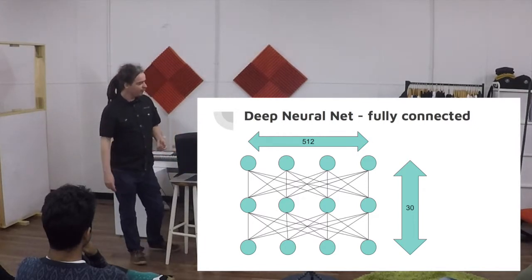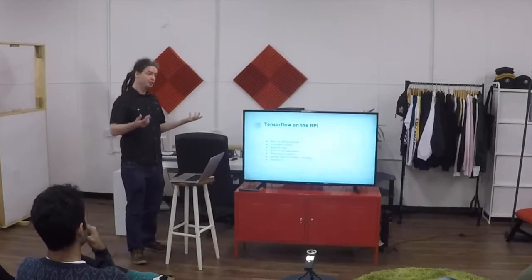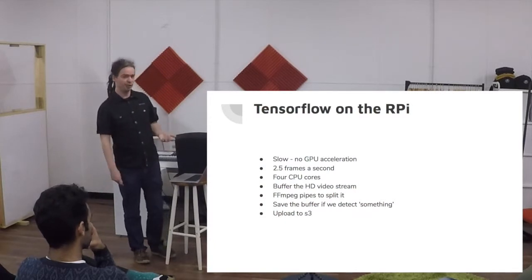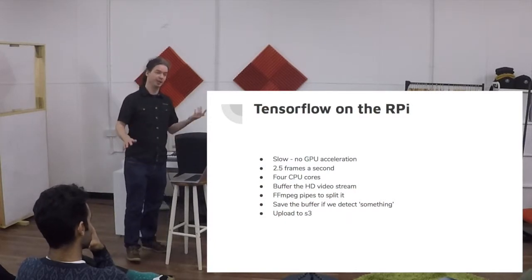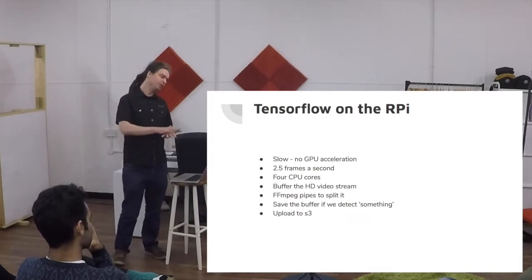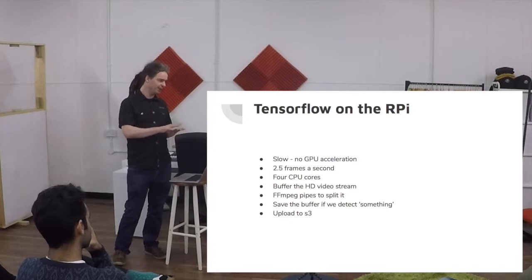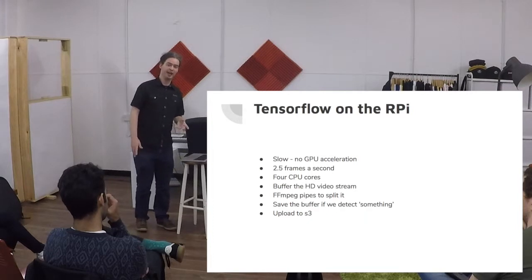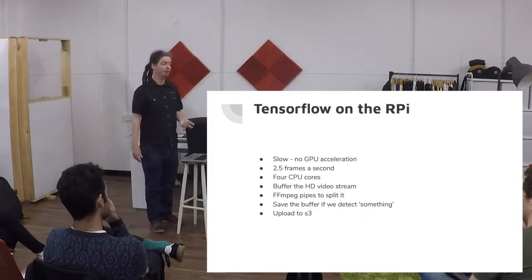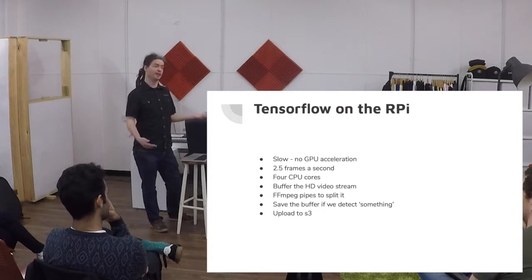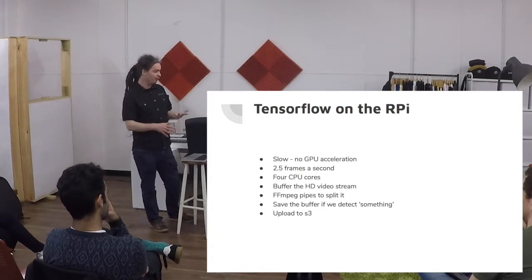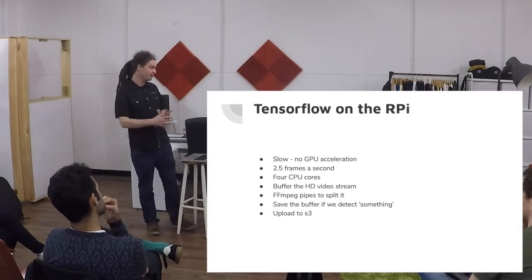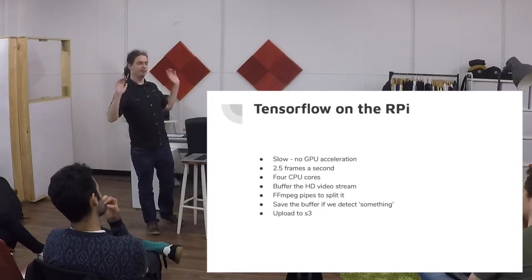Once the model is trained, it's deployed to Raspberry Pis. With no GPU acceleration it runs entirely on the CPU, which is very slow. Technically you could use the GPU to speed it up, but I'm using the GPU for the camera pipeline, so that's ruled out. It only runs at 2.5 frames per second even after a lot of tuning, but that's perfectly fast enough to detect a bird flying in and out. The Raspberry Pi 3 has four cores.